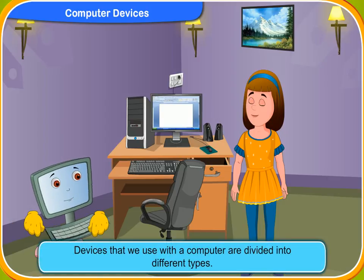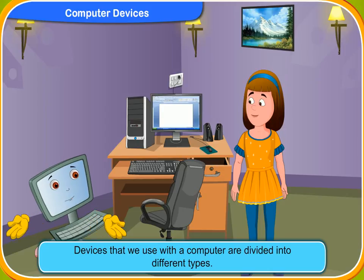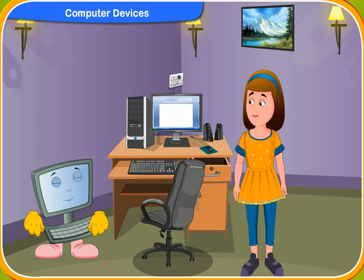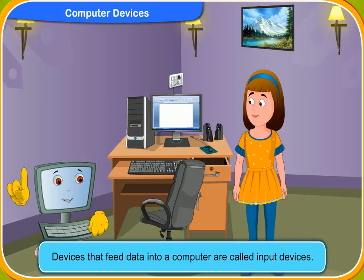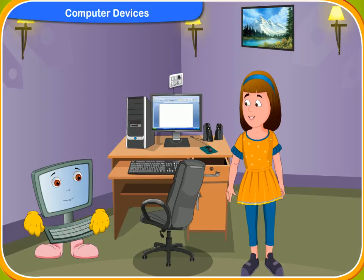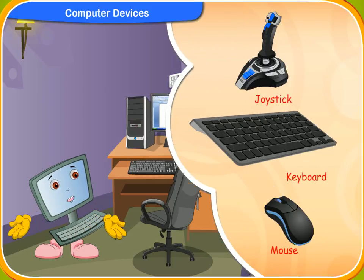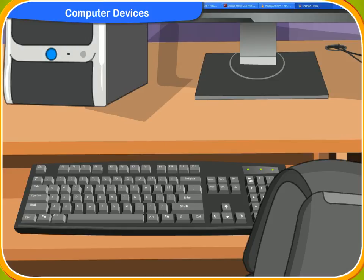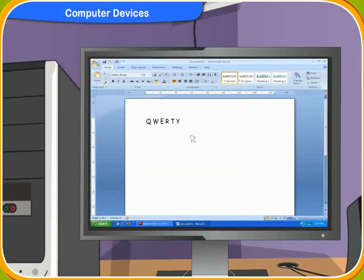Look, Rennie, the devices that we use with a computer are divided into different types. Let us first discuss about input devices. What are input devices? Devices that feed data into a computer are called input devices. What kind of devices feed data into a computer? The keyboard, the mouse or a joystick. They are all used to feed data into a computer. So they all are input devices. Yes, Rennie. I understand.